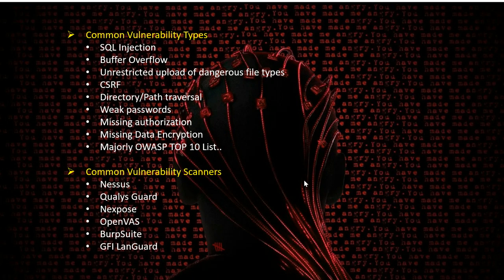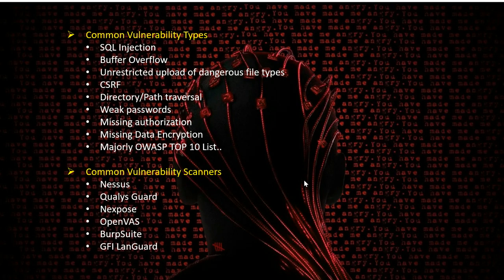Looking at common vulnerability types: we have SQL injection attack, which is the top vulnerability that has been on the OWASP top list for many years. We also have buffer overflow, unrestricted file upload vulnerability, cross-site request forgery (CSRF), cross-site scripting (XSS), path traversal or directory traversal attacks, weak passwords, missing authorization, and inadequate data encryption. There are many other vulnerabilities present in the OWASP Top 10 list — we'll be covering those in upcoming videos.